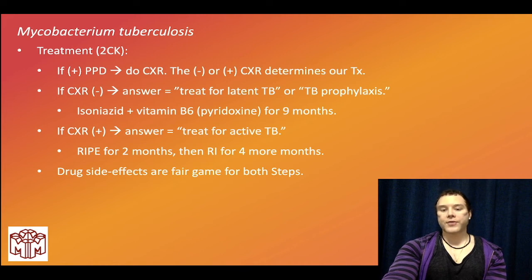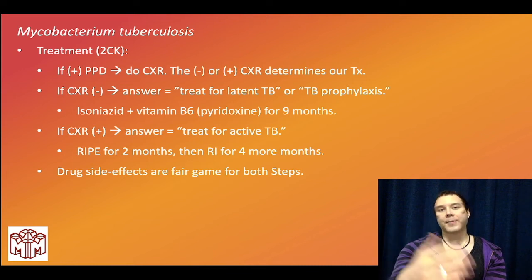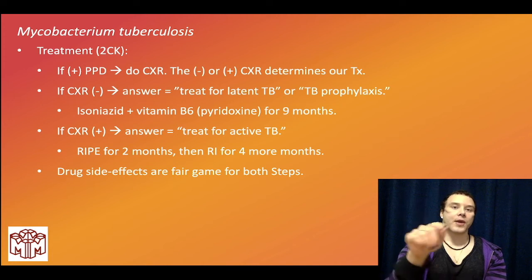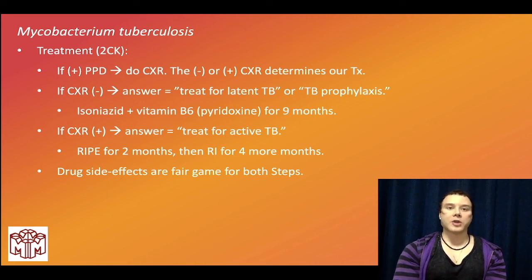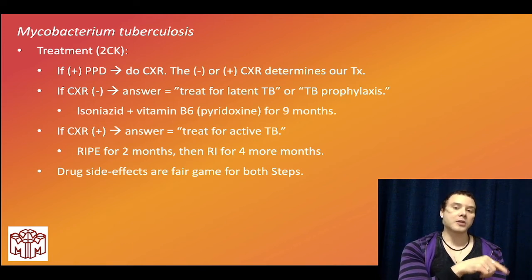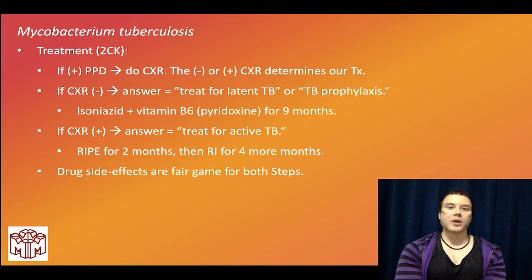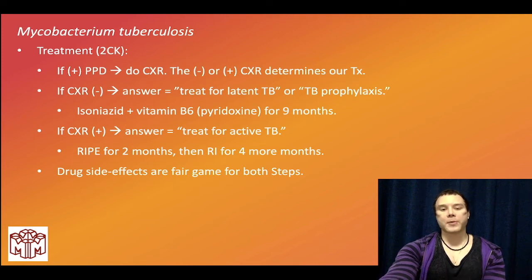Drug side effects are fair game for both steps. Rifampin causes orange-red secretions — benign. RIP (rifampin, isoniazid, pyrazinamide) all cause hepatotoxicity. Rifampin induces P450; INH inhibits P450. Isoniazid can also cause high anion gap metabolic acidosis — it's the 'I' in MUDPILES along with iron tablets. Ethambutol is high yield for visual disturbance: central scotoma, red-green colorblindness.